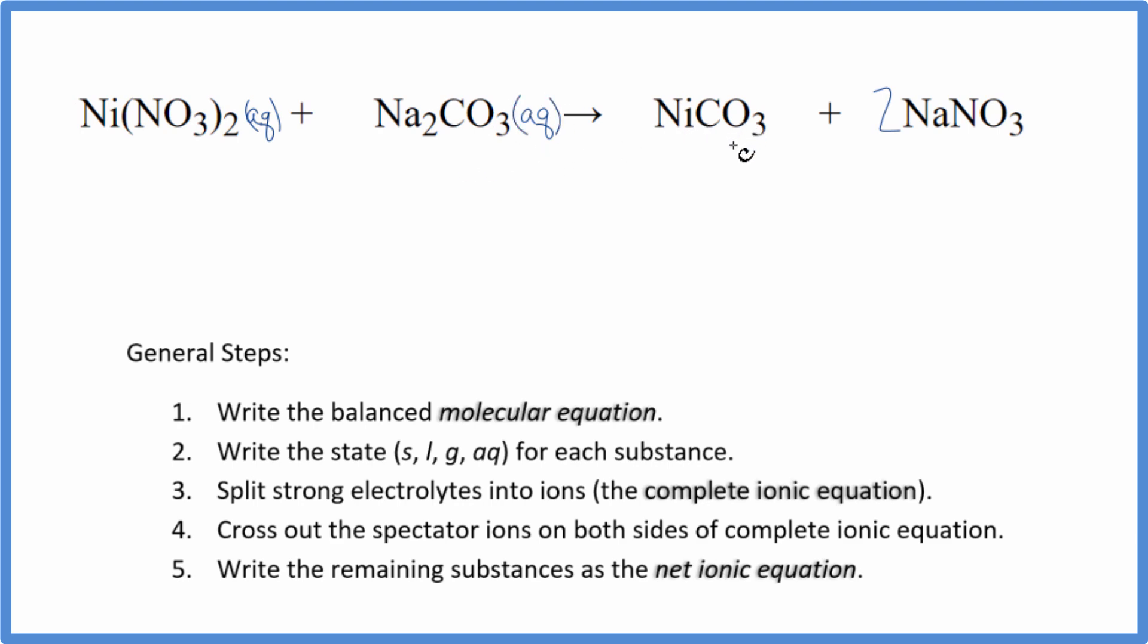Then we get to this nickel carbonate. Carbonates are most often insoluble with a few exceptions like group one elements. Sodium and potassium carbonate, they're soluble. But nickel, that's a transition metal. This is going to be insoluble. So it's going to be a solid. These will react and this will fall to the bottom of the test tube as a precipitate. We have another sodium and a sodium nitrate, so that's going to be soluble. So we have our states.